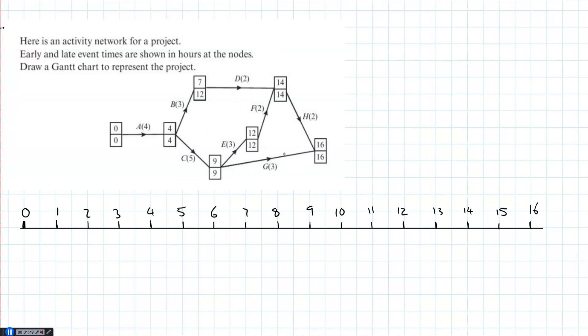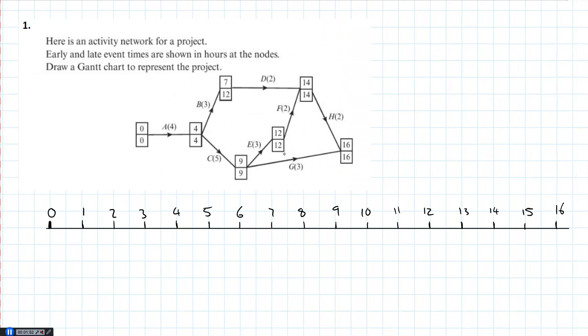One of the first things you want to do is identify critical activities and critical paths, because you're going to put them on first. So if we look through, you should be good at this by now. So A is a critical activity. B is not. C is a critical activity. D is not. E is a critical activity. F is a critical activity. G is not. And H is. If you're not sure how to do the critical activities, then watch the video on it.